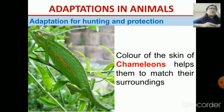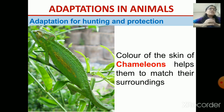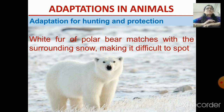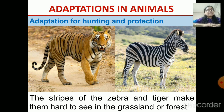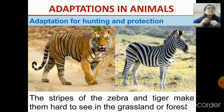Another example is the chameleon. It has the habit of changing its color when it changes its environment. When it is on the tree, it has green color, so it becomes difficult to spot it — it merges with the surrounding color. Another example is the polar bear — it is white in color and it is found in snow, which is also white, so it matches the surrounding and it becomes difficult to spot it. The stripes of tigers and zebras also mix with their surroundings in the forest or grassland and it becomes difficult to spot them.